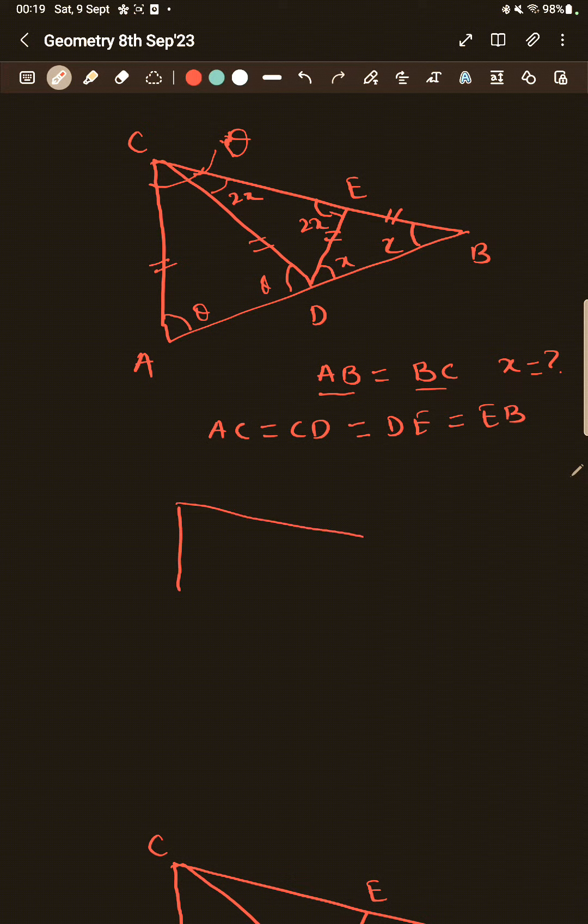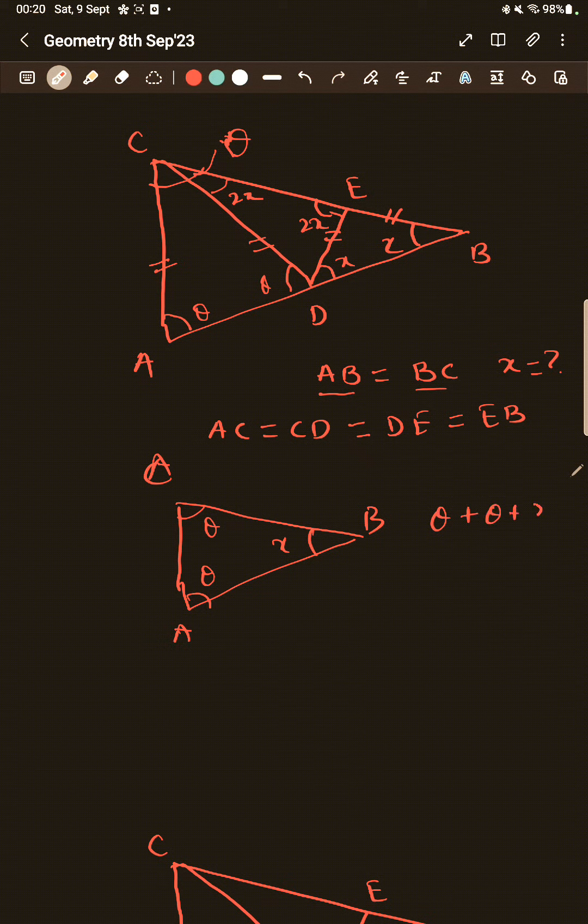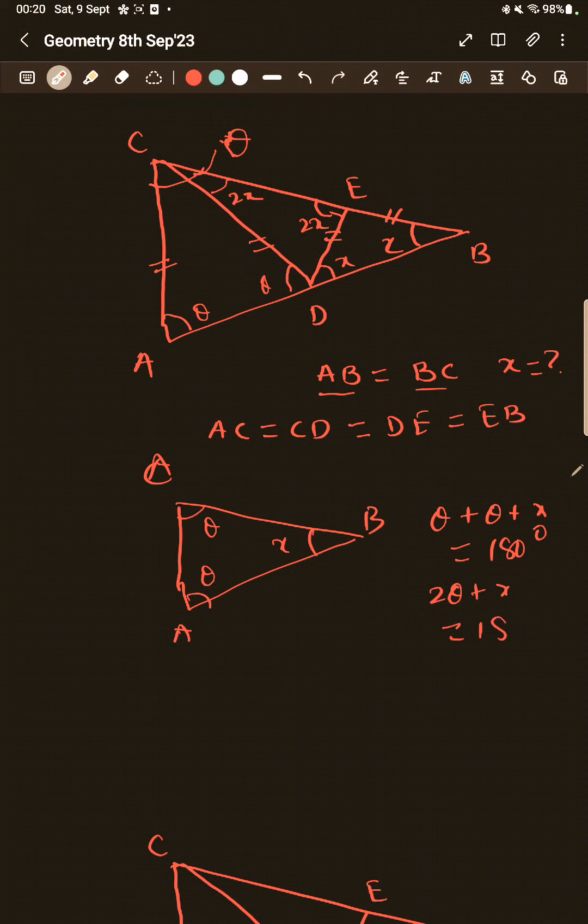For the triangle ACB, I can see here, A, C, B, A. I can see theta is here, theta is here and X is here. So I can say theta plus theta plus X is 180 degrees, which is 2 theta plus X equal to 180 degrees. This is my equation 1.